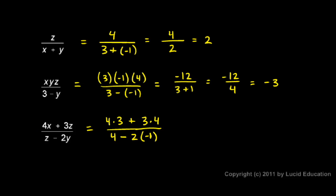So up top, 4 times 3 is 12 plus 3 times 4, which is 12, over 4 minus 2 times negative 1. Well, 2 times negative 1 is negative 2. So I have 4 minus negative 2, which is the same as 4 plus 2. Notice once again, with each step, our problem gets simpler. 12 plus 12 is 24, and 4 plus 2 is 6 down below. And 24 divided by 6 comes out to 4.